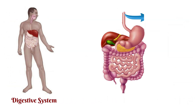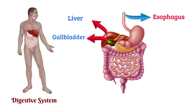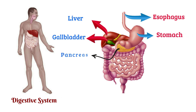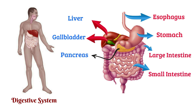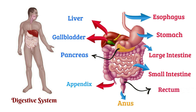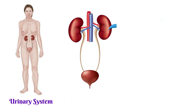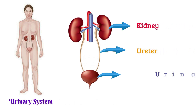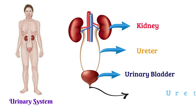Esophagus, liver, gallbladder, stomach, pancreas, large intestine, small intestine, appendix, rectum, anus. Urinary system: kidney, ureter, urinary bladder, urethra.